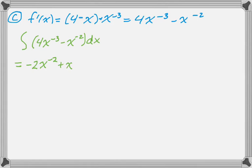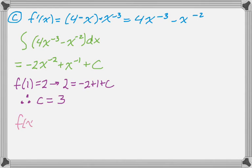And the same sort of thing here. Negative 2 plus 1 is negative 1. The reciprocal is negative 1. And there was already a minus there, so we get that. Don't forget your plus C. Let's solve for C now. So f of 1 is 2, which means that 2 is equal to negative 2 plus 1 plus C. You can tell from that that C is 3. And then we write f of x.